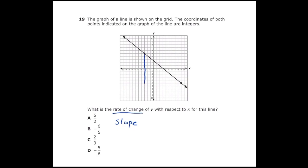Once I do that I see that I'm going to go down 10 spots. Since we're going down that's going to be a negative number. Then we're going to go to the right 12. So my rise over run is negative 10 over 12, which reduces to negative 5 over 6. So my answer is letter D.